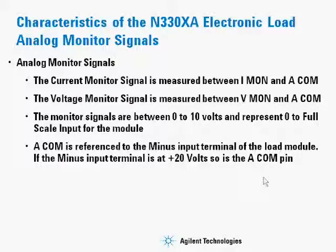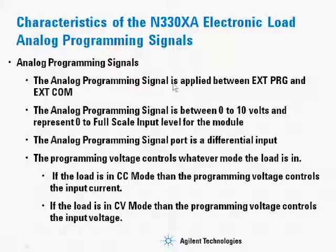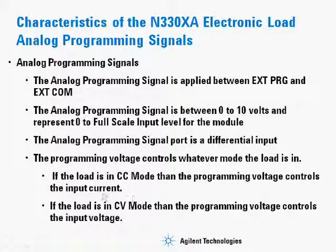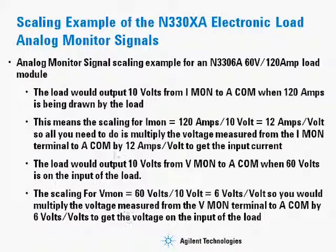The analog programming signal is applied between the external probe and the external comm pin. The analog programming signal is also between 0 to 10 volts and represents 0 to full scale. It is a differential signal. The programming voltage controls whatever mode the load is in — if you are in CC mode, the programming voltage controls the input current; if the load is in CV mode, the programming voltage controls the input voltage.